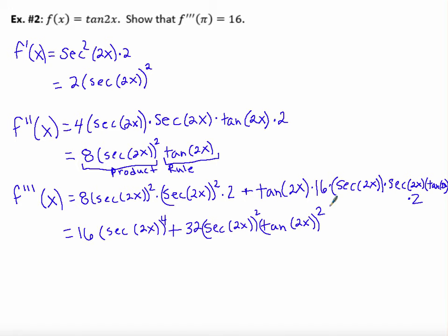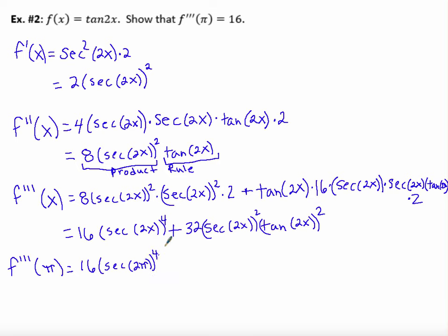Wowzers. Okay, so now we've got our third derivative, and that's great. But we need to show that F triple prime of pi is equal to 16. So we need to substitute pi in for all the x's. F triple prime of pi is going to be 16 times the secant of 2π to the fourth power, plus 32 times the secant of 2π squared times the tangent of 2π squared.